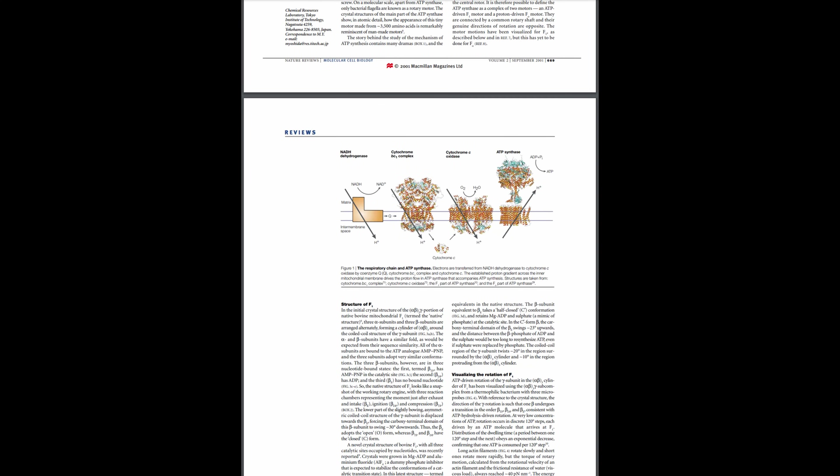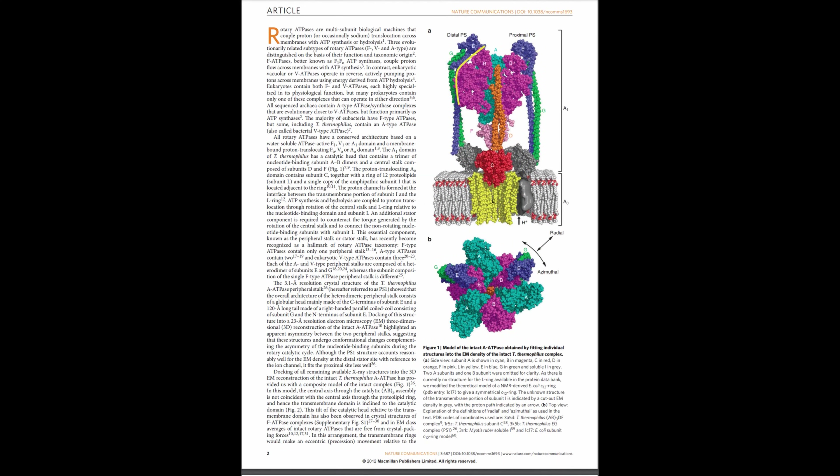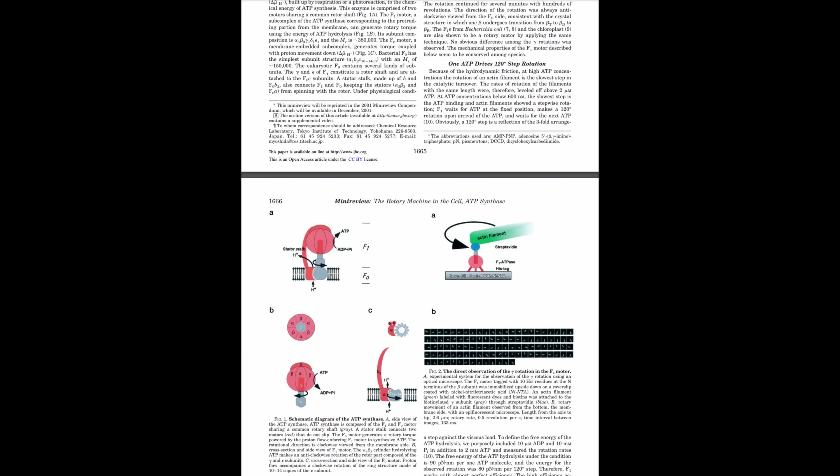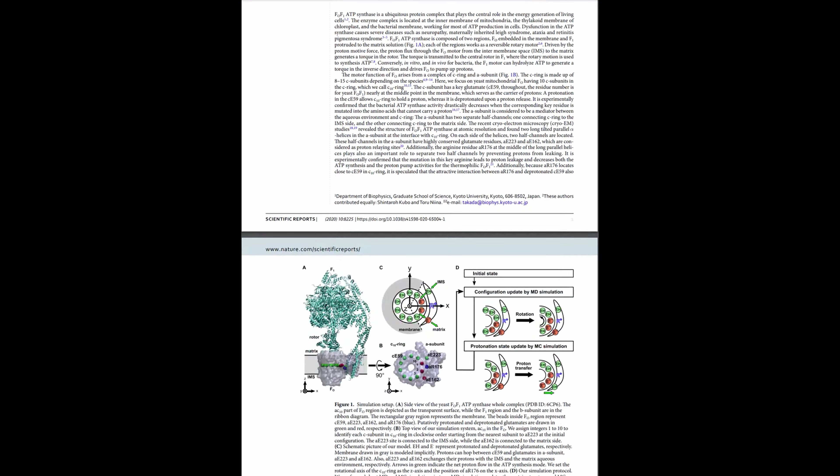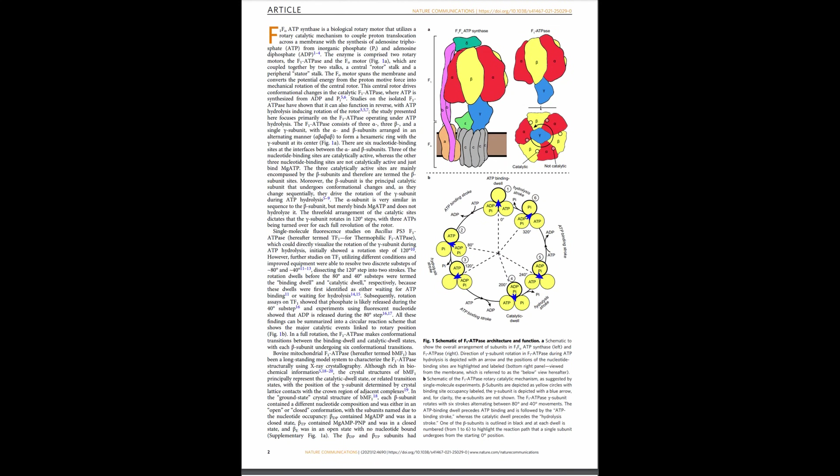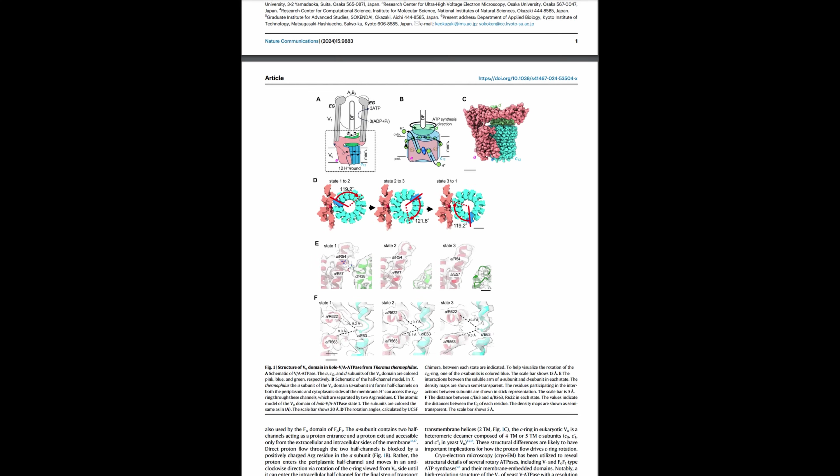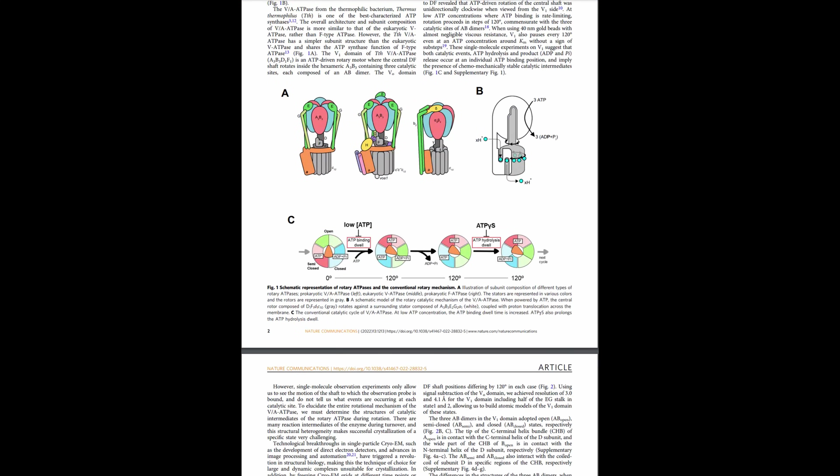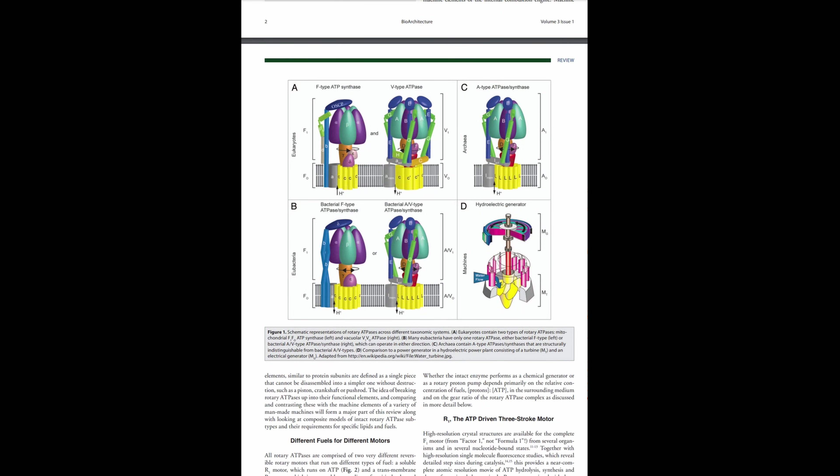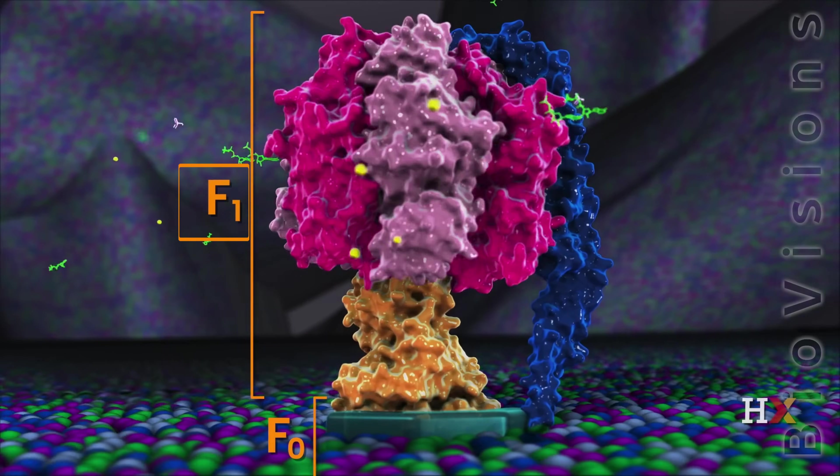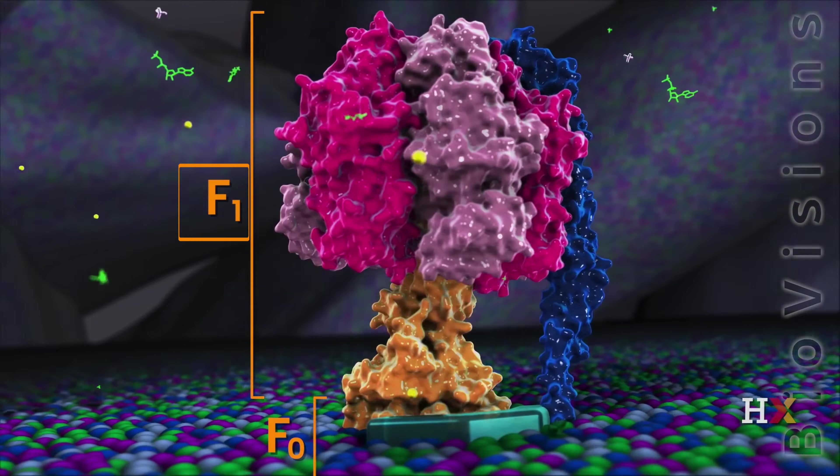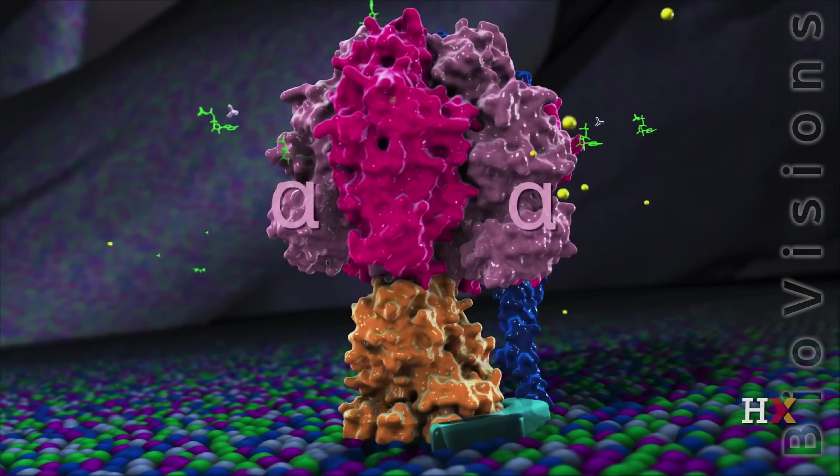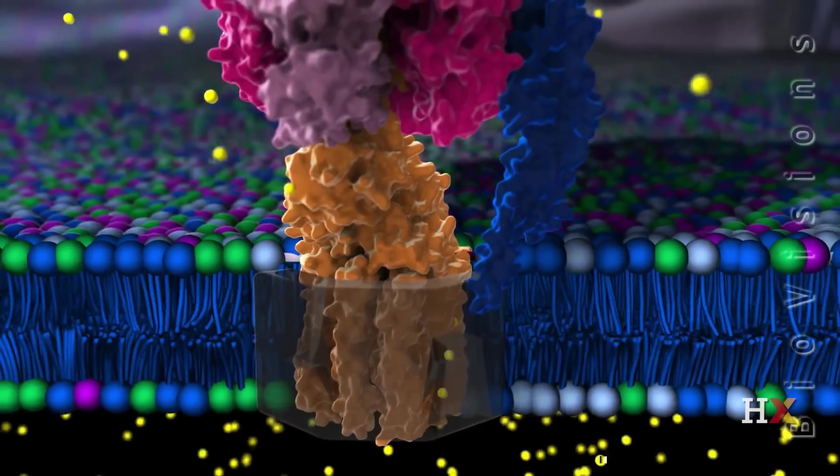In many scientific articles, ATP synthase is described as the world's smallest engine. The F1 engine uses chemical energy from ATP hydrolysone. The F0 motor uses the potential energy obtained from the proton gradient pumped from the inner membrane of the mitochondria to the outer membrane.